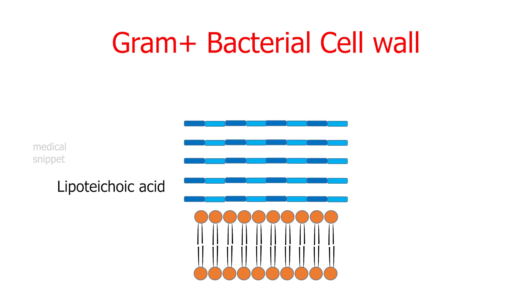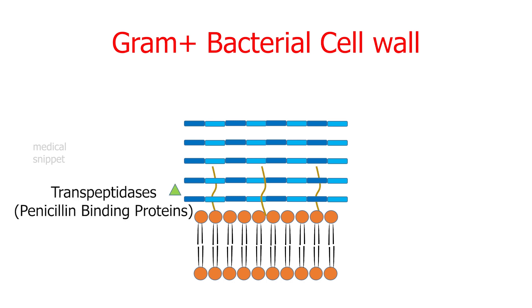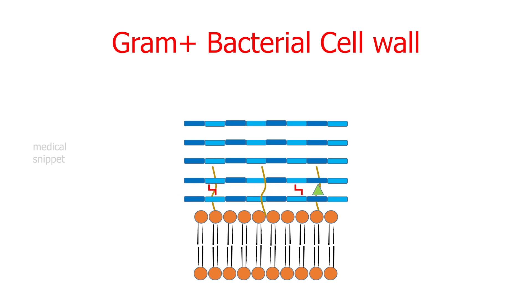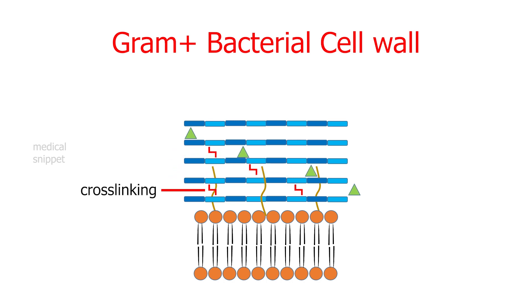Lipoteichoic acid anchors the peptidoglycan layers to the lipid bilayer. Proteins called transpeptidase enzymes help in cross-linking of the peptidoglycan strands, which is essential for the stability and rigidity of the bacterial cell wall.